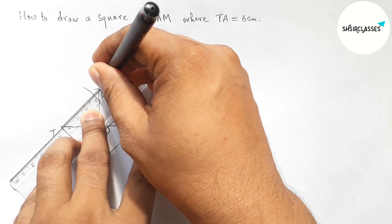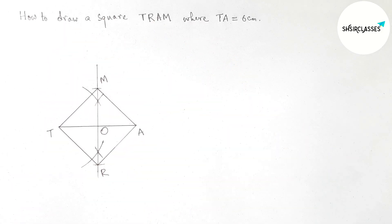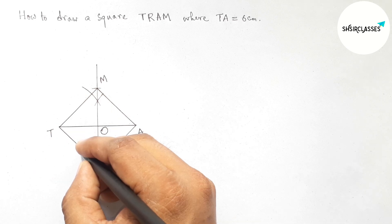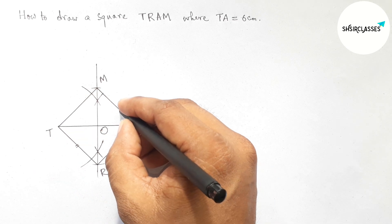Now we know that all the sides of a square are equal in length.